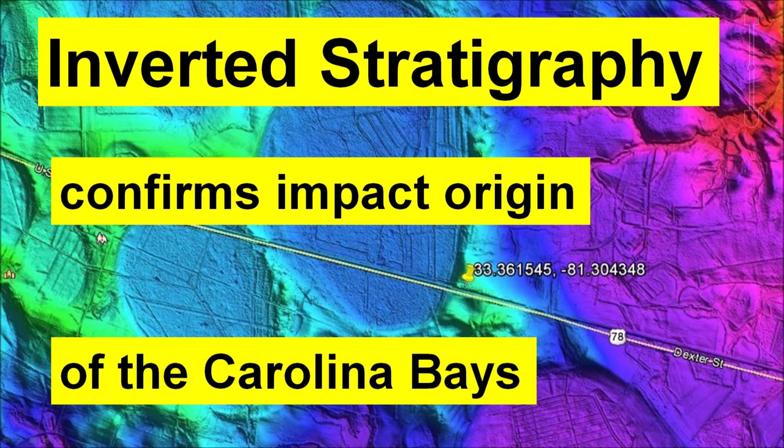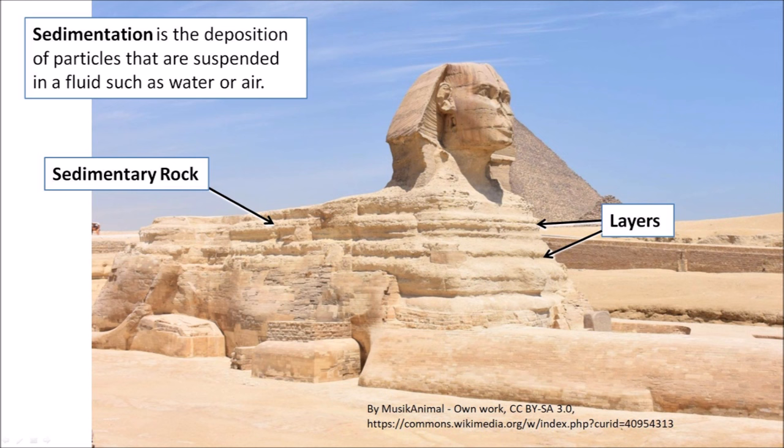We have to start with some geological principles. Sedimentation is the deposition of particles that are suspended in a fluid, such as water or air. The body of the Great Sphinx of Giza consists of layers of minerals that were deposited over millions of years and then bonded together to form sedimentary rock. The exposed rock has been eroded by wind and rain, revealing the layers of the sediment.